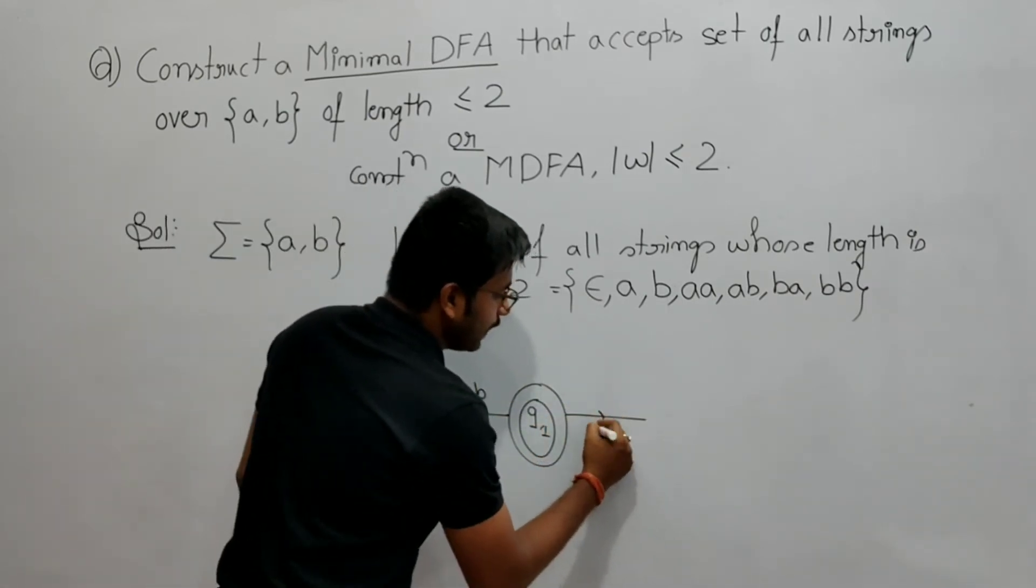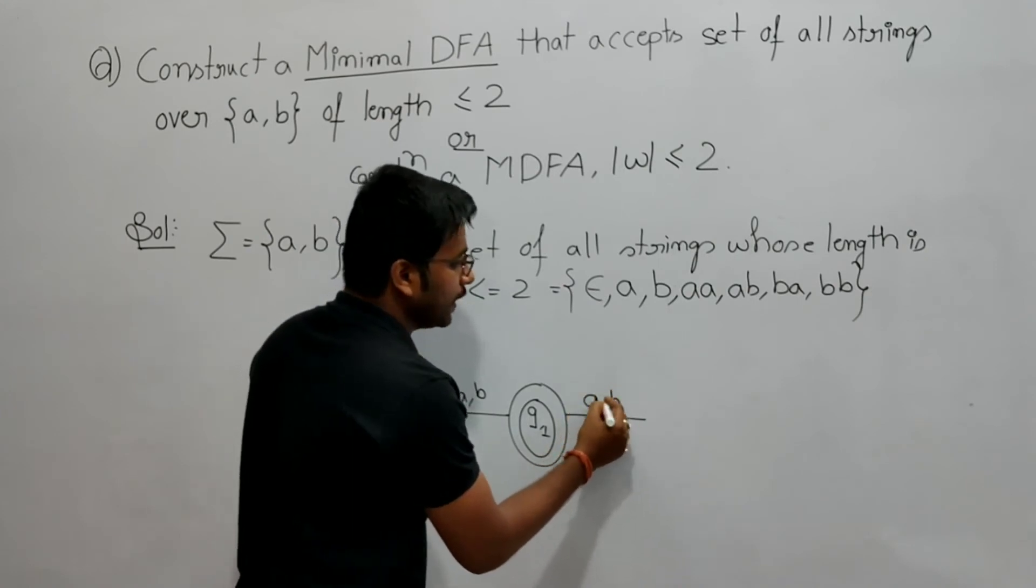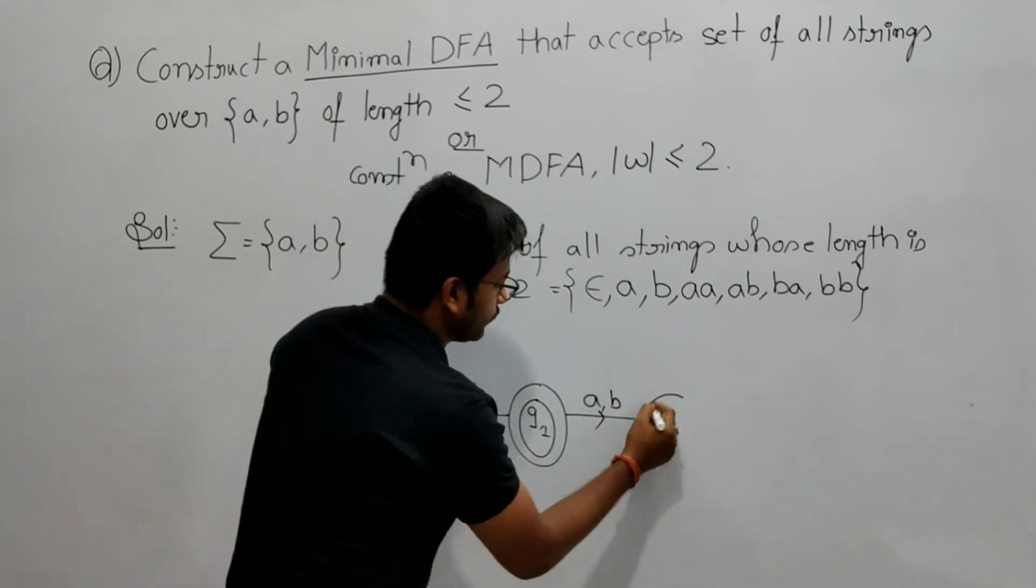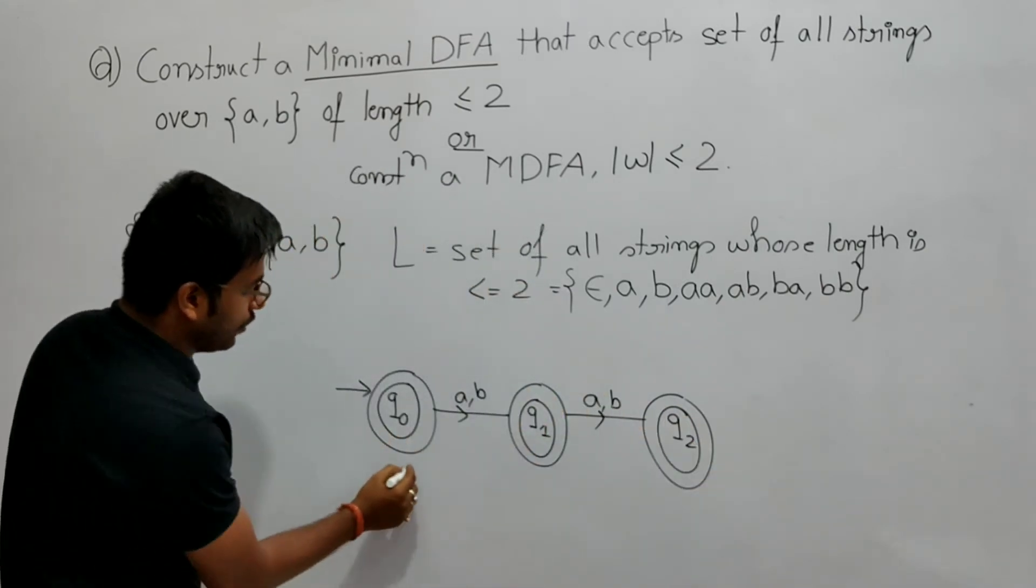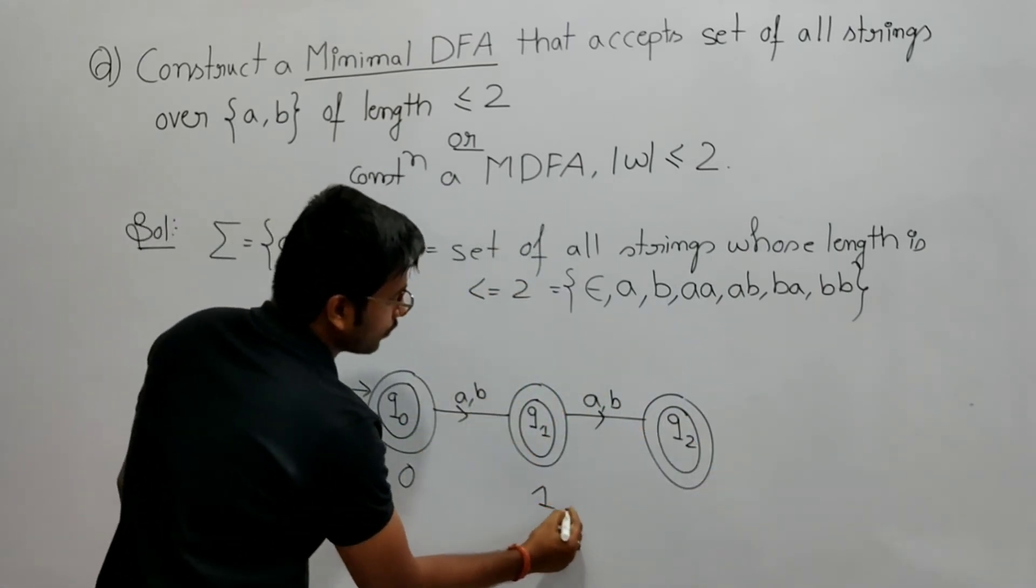Now q1 by getting either a or b, length will become 2. See, we have to accept this because length 0 belongs to this language, length 1 belongs to this, length 2.